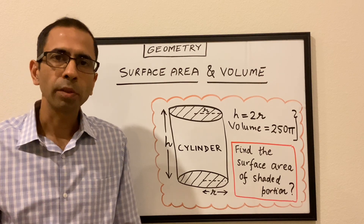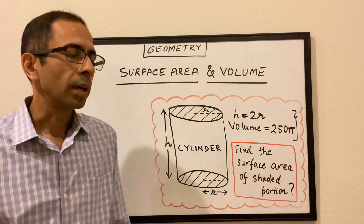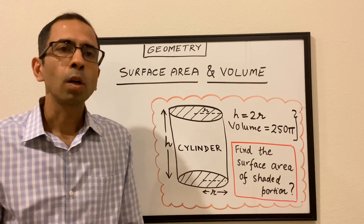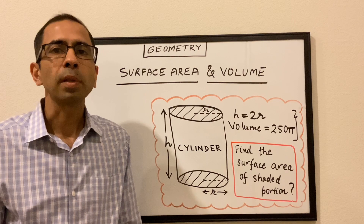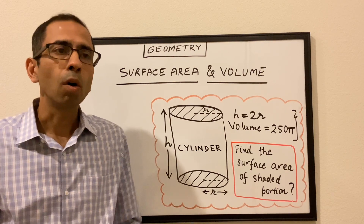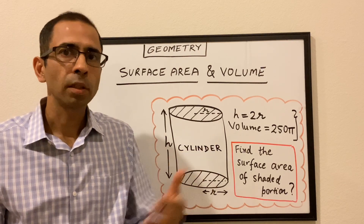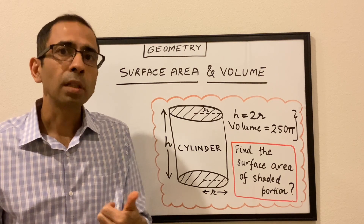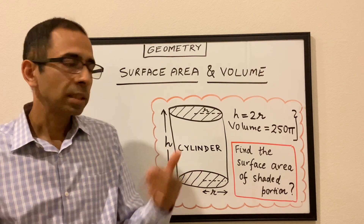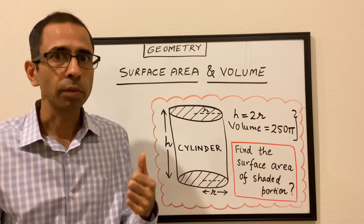Hello all. Welcome to the fourth session of the geometry series. In this session, we are going to talk about the surface areas and volumes. Before we get started, we need to understand what's a three-dimensional figure. Up till now, we have talked about shapes like triangles, squares, rectangles and circles — all those were two-dimensional shapes. The third dimension which comes into picture makes a shape a 3D figure, and hence surface area and volume come into play. That third dimension is nothing but the height of the figure.